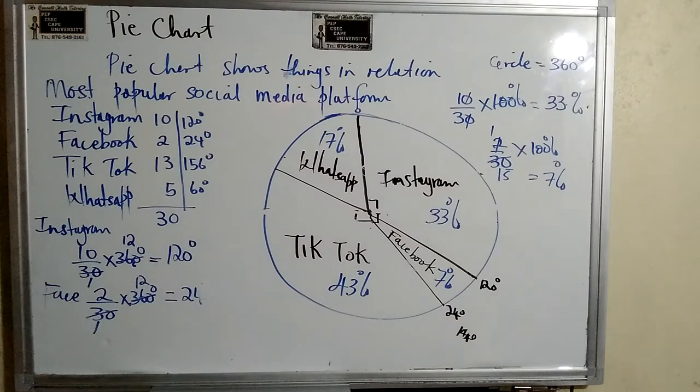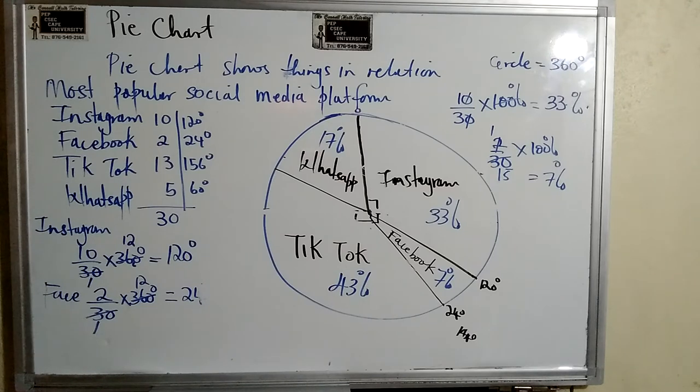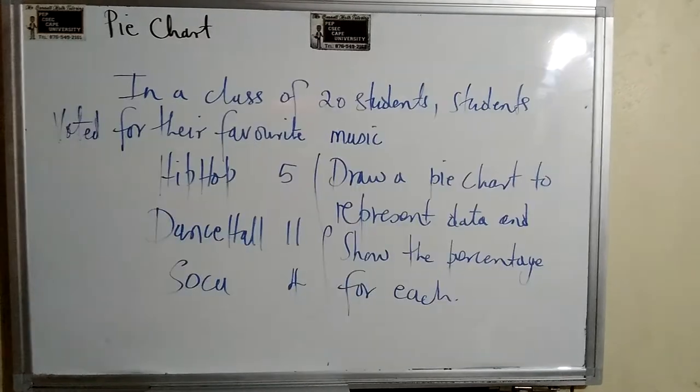Thanks for watching, but I'm gonna let you guys do one on your own. Alright guys, here's what you're gonna do for me. In a class of 20 students, students voted for their favorite genre of music. Hip-hop got 5, dancehall got 11, soca got 4. And you are supposed to draw a pie chart to represent the data and show the percentage of each. So you're gonna calculate the degrees just like I did. Remember, a pie chart, a circle, measures 360 degrees, so we have to multiply by 360 degrees. And for the percentage, percentage means out of 100, so we can multiply by 100 percent. Alright guys, and a hint, when you add up everything, it's supposed to get 100 percent. When you add up the degrees, it's supposed to get 360 degrees.